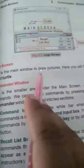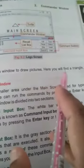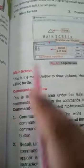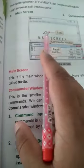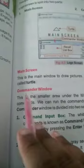What is main screen? This is the main screen to draw pictures. Here, you will find a triangle called turtle.